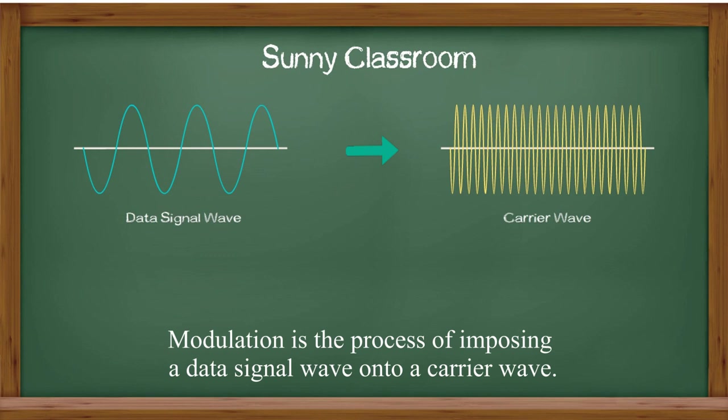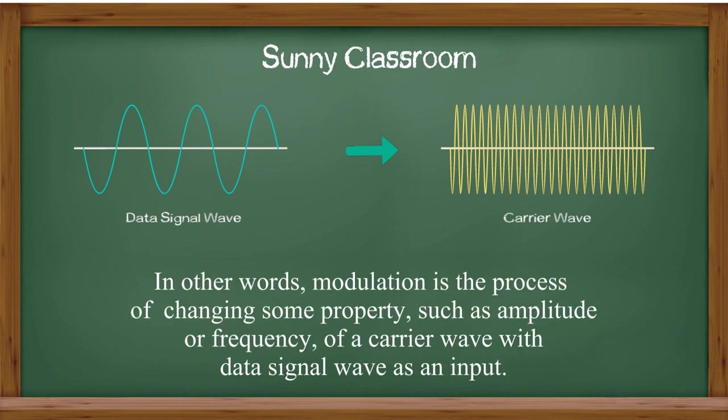Modulation is a process of imposing a data signal wave onto a carrier wave. In other words, modulation is the process of changing some properties, such as amplitude or frequency, of a carrier wave with a data signal wave as an input.